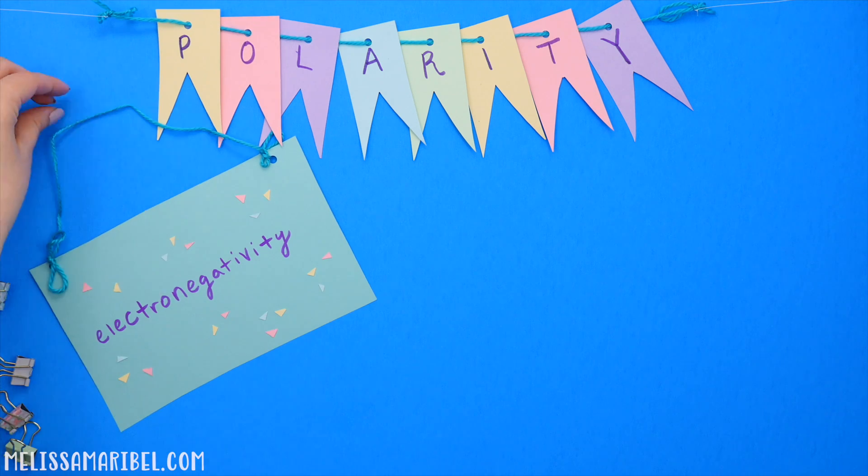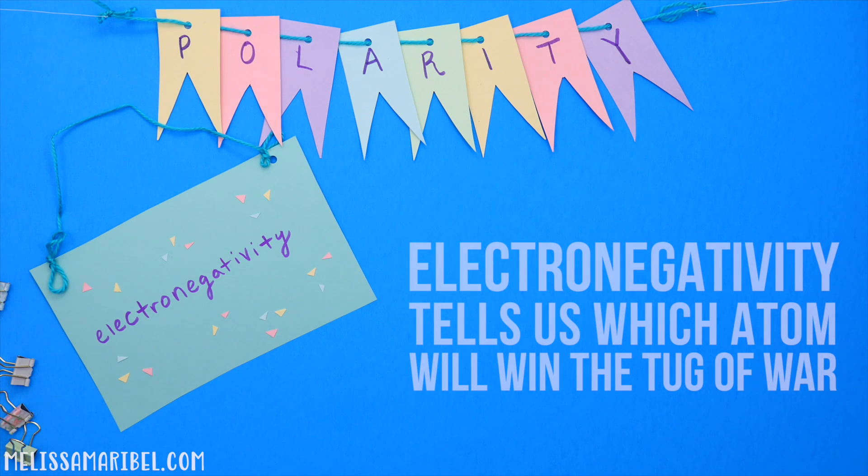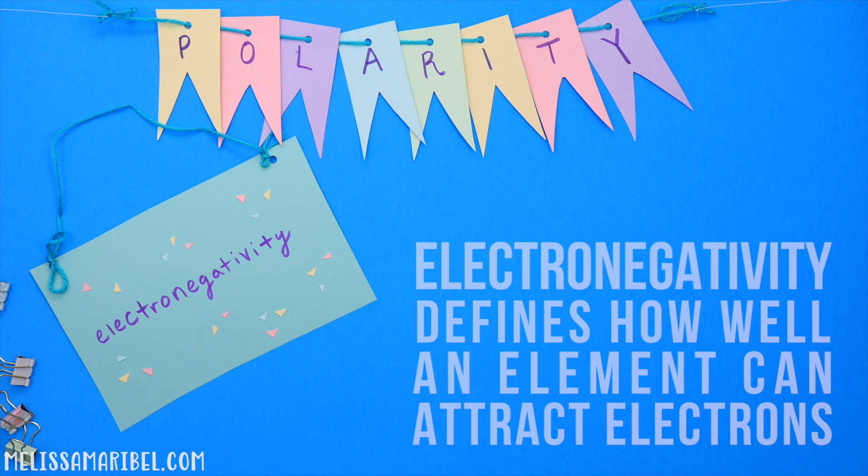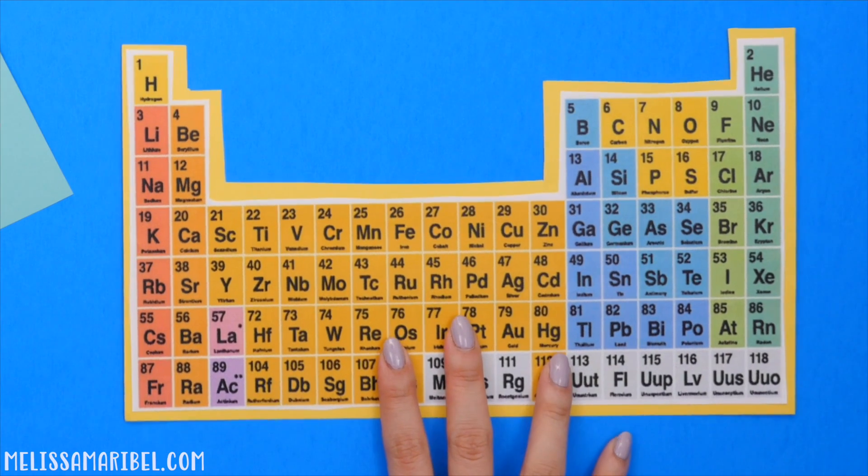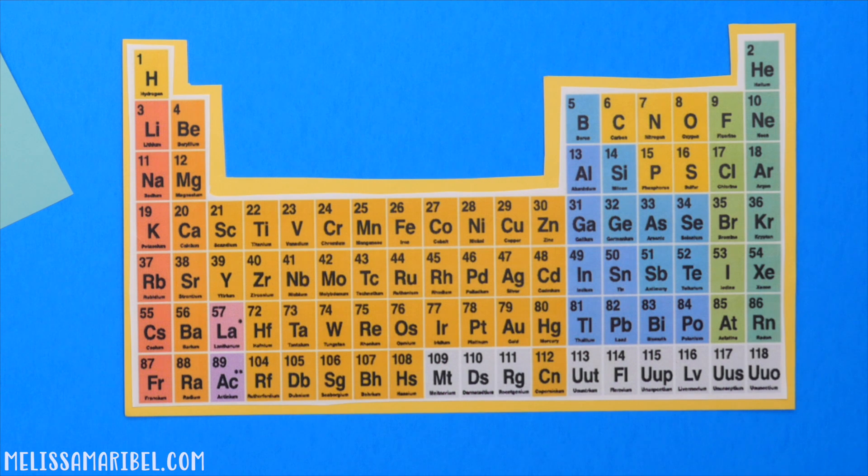Second, electronegativity. Electronegativity tells us which atom is stronger and will most likely win the tug-of-war. Electronegativity essentially defines how well an element can attract electrons. The trend on the periodic table for electronegativity increases as we move from left to right and move up a group.